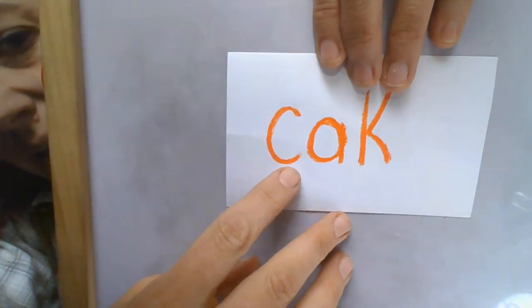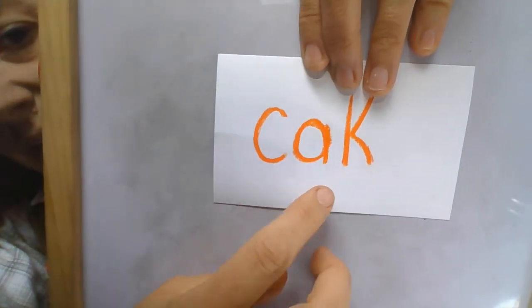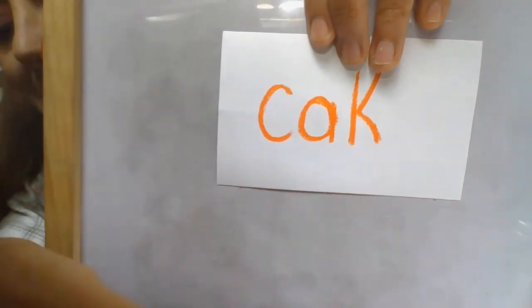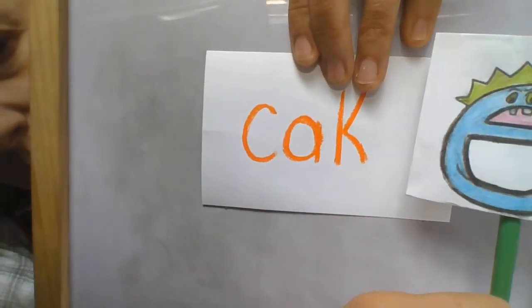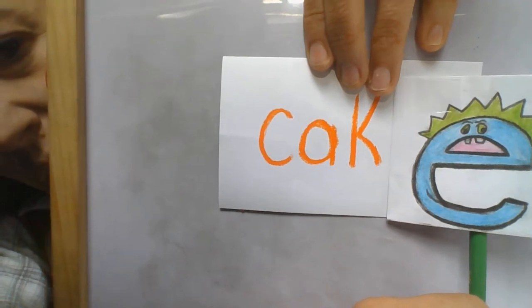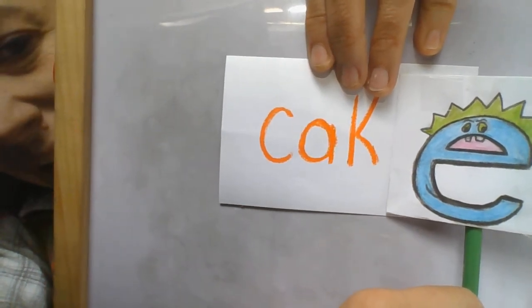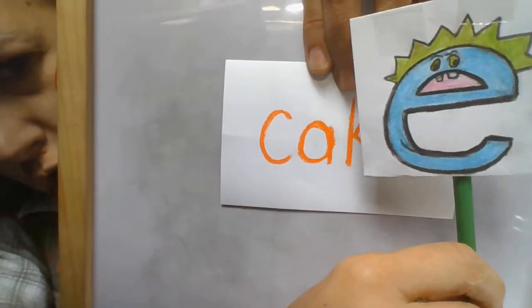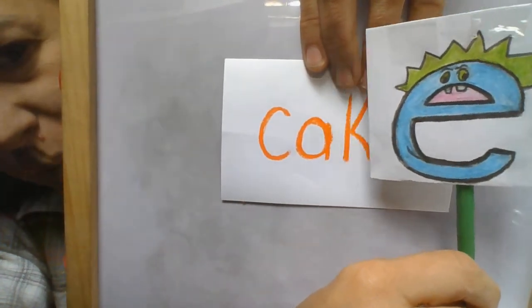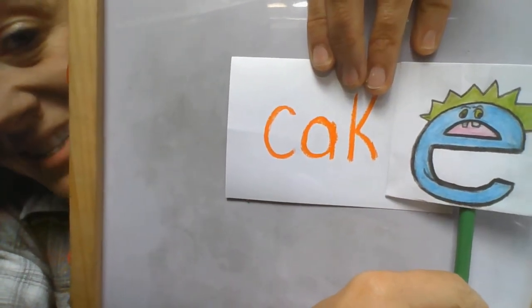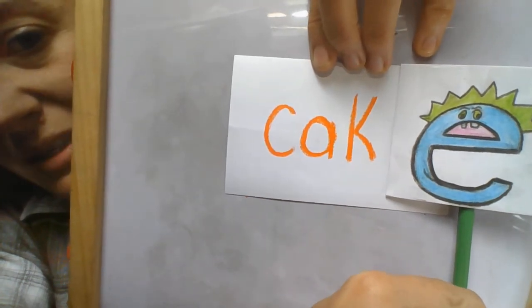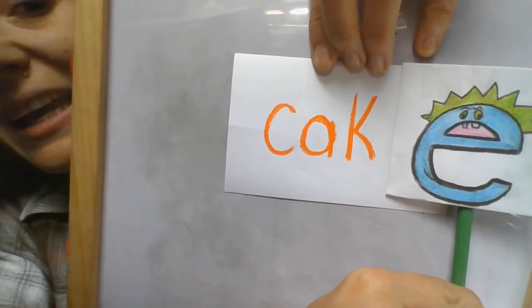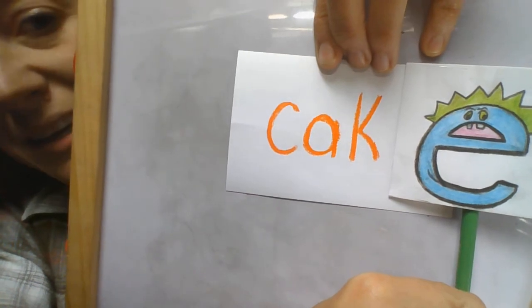We have these letters here. Let's say them. These letters say cack. But what if bossy E shows up? What does he do? He says to A, say your name. And A has to say his name. So now the new word is cack, a, cack, cake, cake.